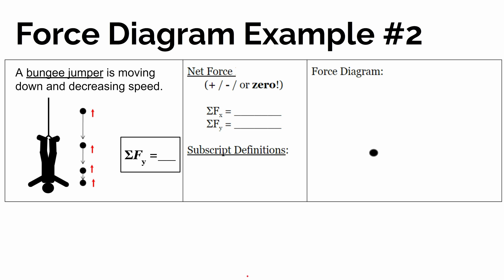For our last example, we've got a bungee jumper who is moving down and decreasing in speed. We're going to be drawing the forces that the bungee jumper feels. So we're going to draw a dashed line around the bungee jumper.